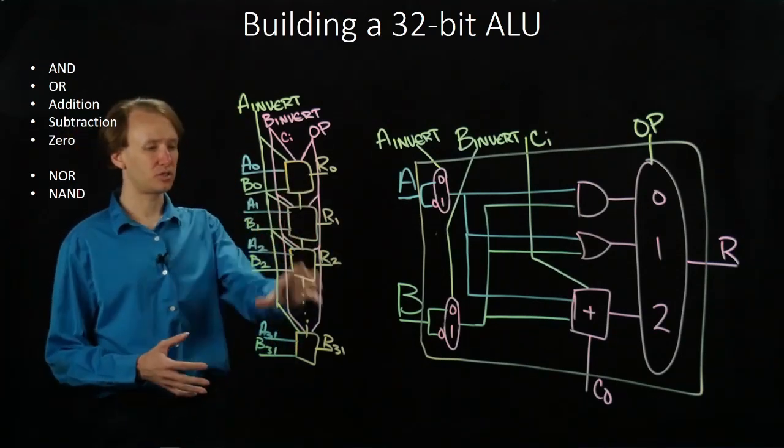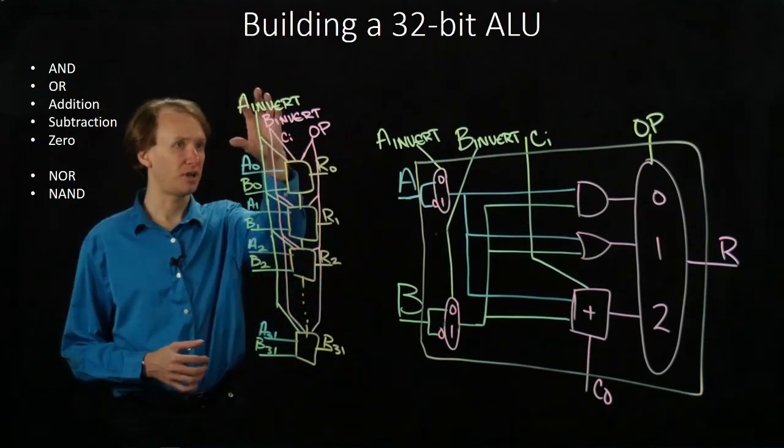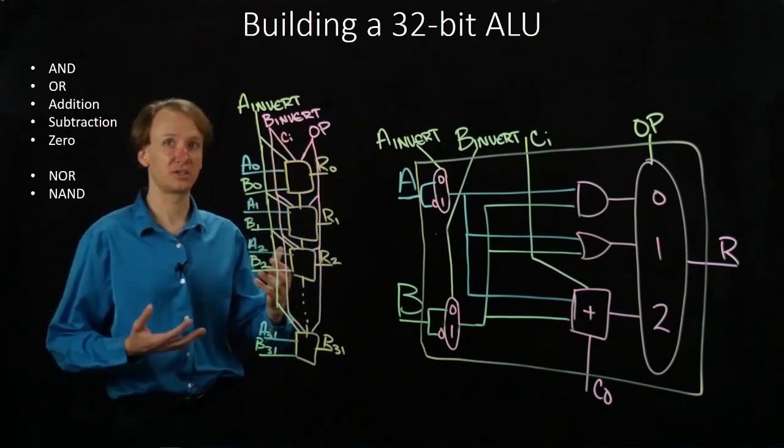So this will give me a 32-bit ALU. I've stacked up 32 of our one-bit ALUs. I've connected all of our signals to where they need to go.